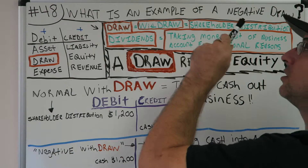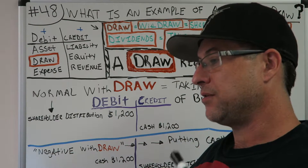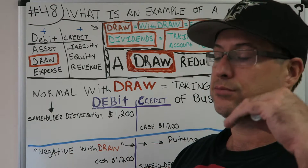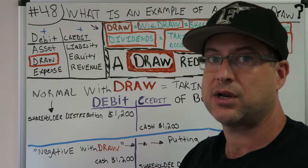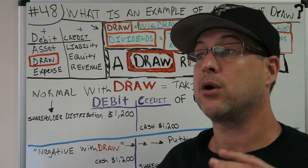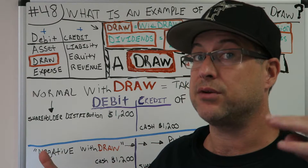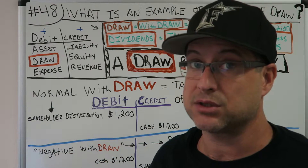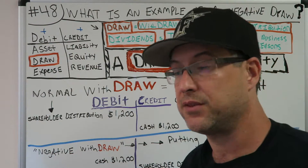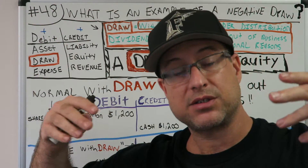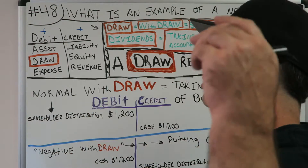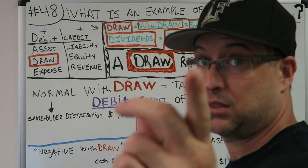If we're talking about what is an example of a negative draw — that's the question — everything builds on each other with accounting, which is great; it hasn't changed in 500 years. I know you're trying to better yourself, you're trying to learn accounting, and I think it's a great skill to have. Even in this economy, every business is always going to need an accountant to deal with the money. Thank you for trying to better yourself, thank you for supporting the channel — give a like if you love the grind. We're uploading Monday through Friday — that's a new schedule for right now.